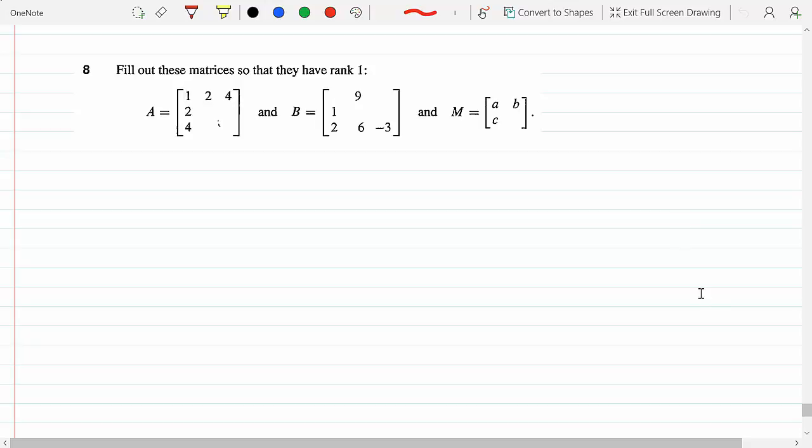Fill out these matrices so they have rank 1. You know what that means, right? That means if they have rank 1, the number of pivots has to be 1. There can't be more than one pivot.